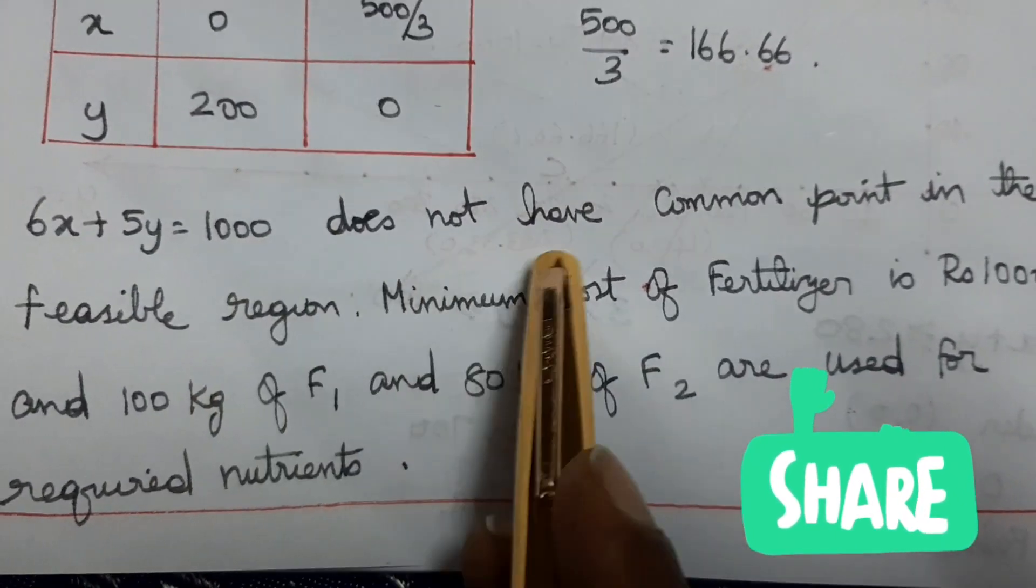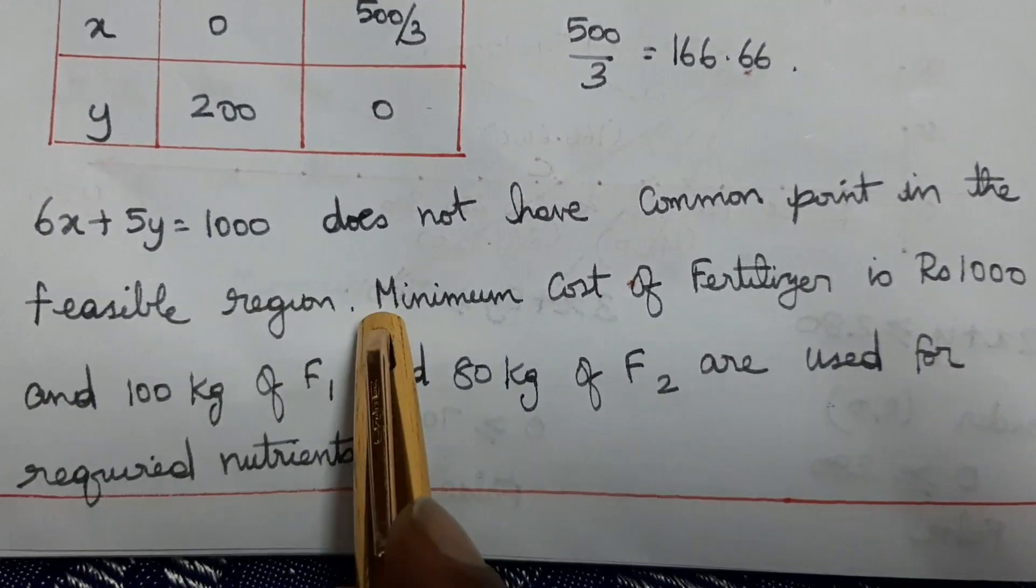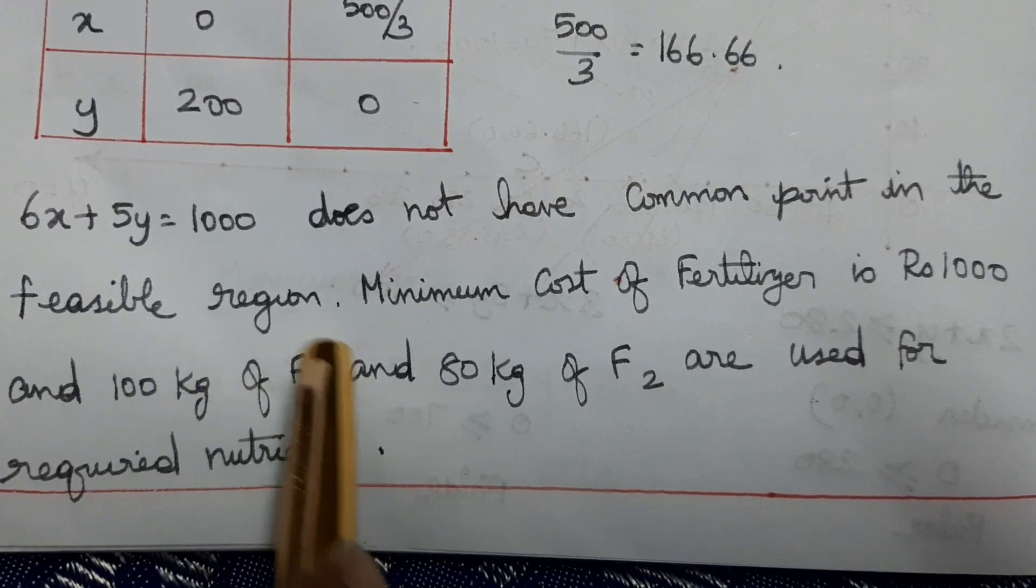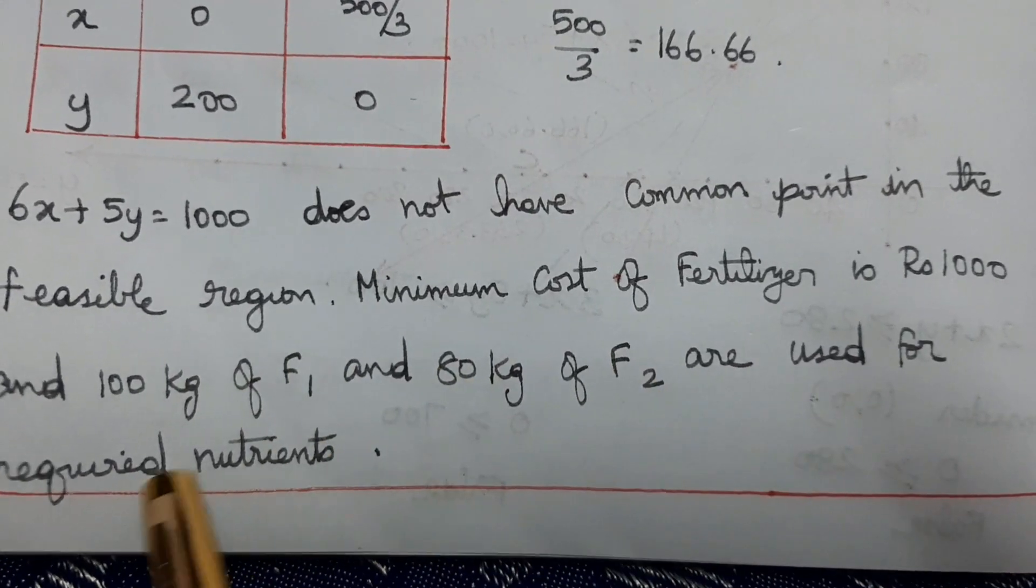Therefore, minimum cost of fertilization is 1000 rupees when you mix 100 kg of F1 and 80 kg of F2.